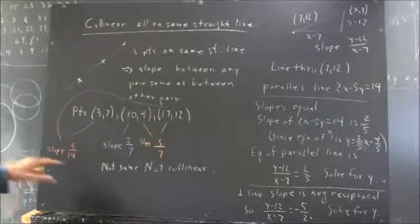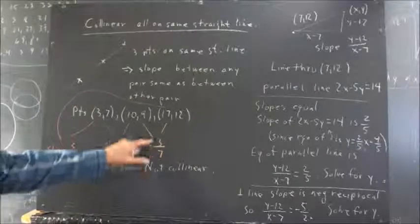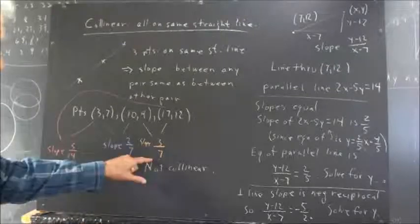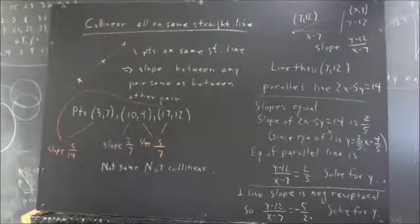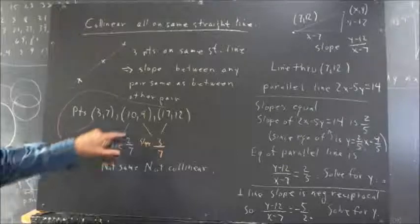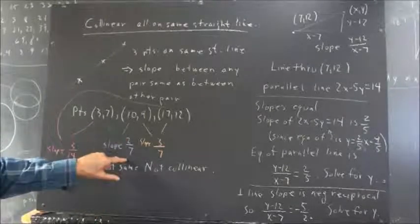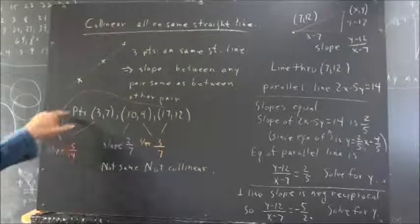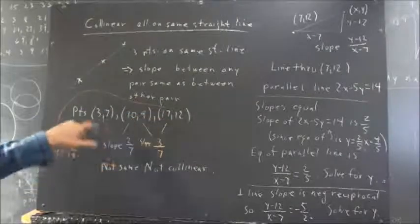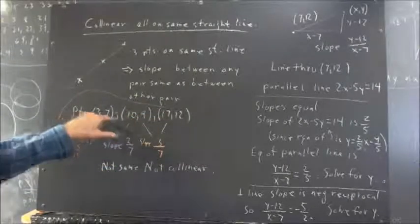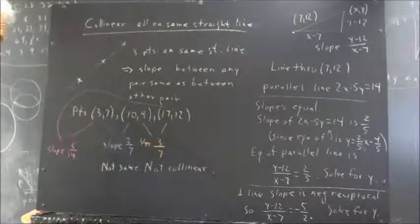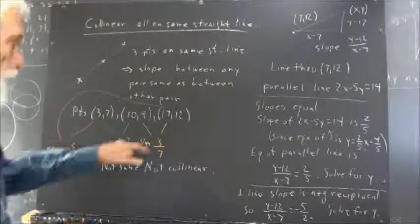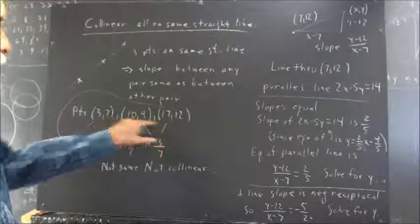Okay, well, 5/14 is not the same as 3/7 because 3/7 is 6/14. Okay? 5/14 is not the same as 2/7 because 2/7 is 4/14. So we have 5/14 between the first and last point, 4/14 between the first and second, if we want to make the comparison easily, and 6/14 between the second and third.